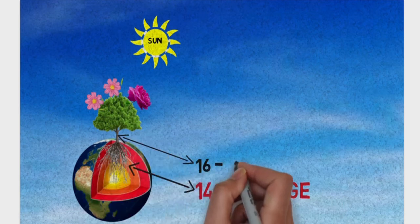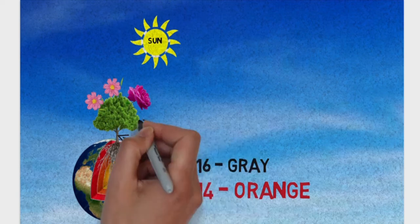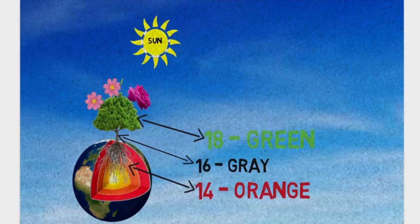Gauge 16 is gray in color, as the stem of the tree is gray in color. Gauge 18 is green in color, like the green leaves of the tree.